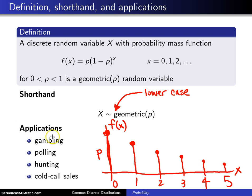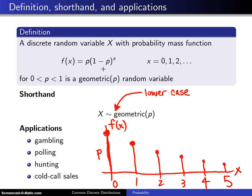A couple of applications: some people indicate that a good way to gamble is to keep placing your bet until you finally win — the number of failures before that first success will have the geometric distribution. In polling, you can keep polling people until you get them to support a candidate of interest. In hunting, you can keep shooting until you hit your target. In cold call sales, a salesperson might continue calling people until they finally make a sale.